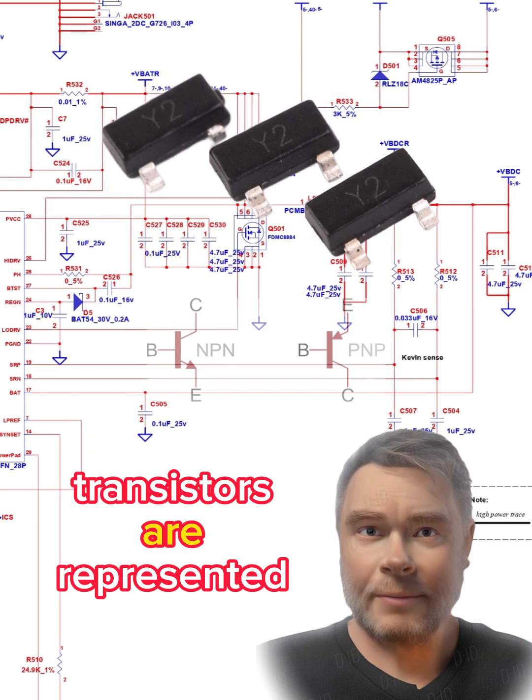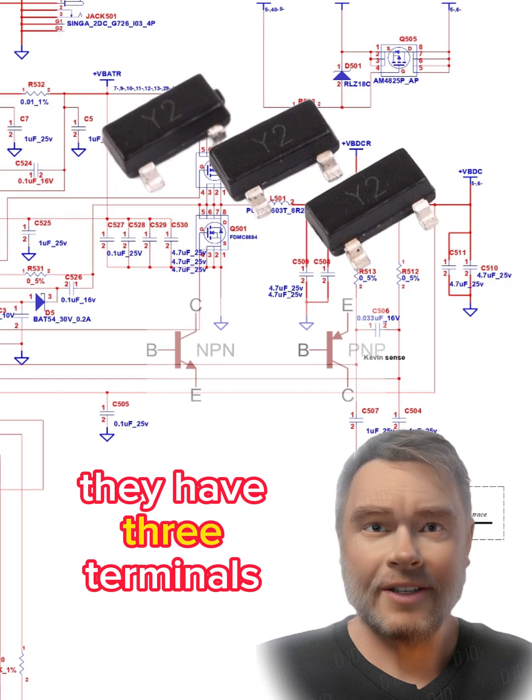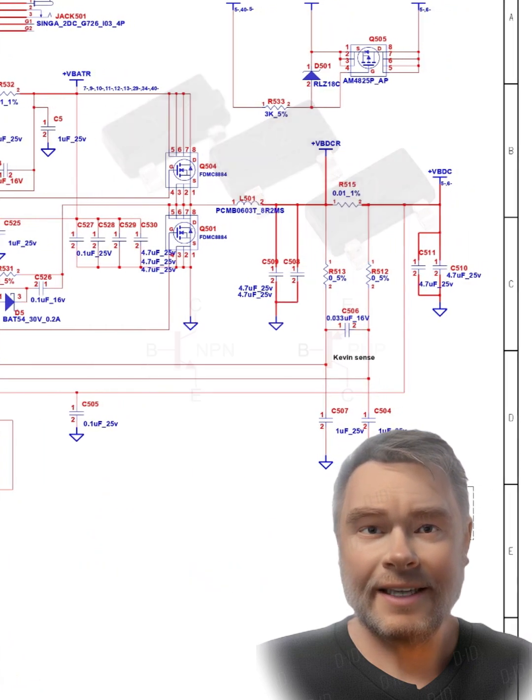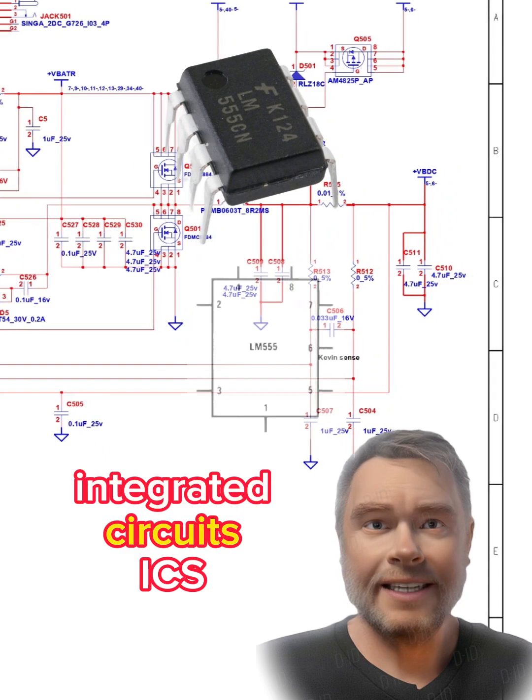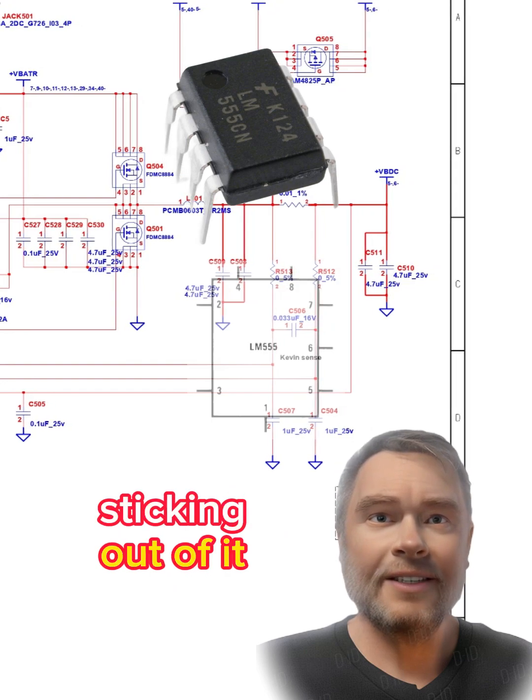Transistors are represented by a more complex symbol, but the basic idea is that they have three terminals: emitter, collector, and base. Integrated circuits (ICs) are represented by a rectangle with pins sticking out of it. The type of IC and its pinout is usually written next to the symbol.